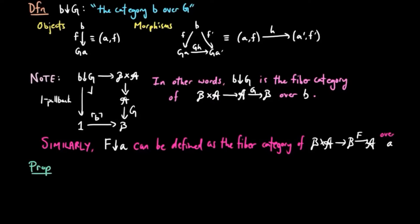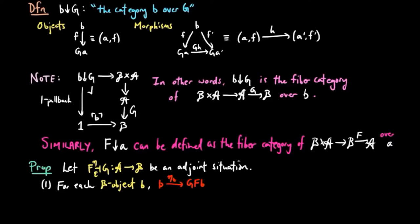The main result of this section is the following. Let F left adjoint to G from A to B be in an adjoint situation. The following conditions hold. One, for each B object B, the unit eta B is the initial object in the category B over G.